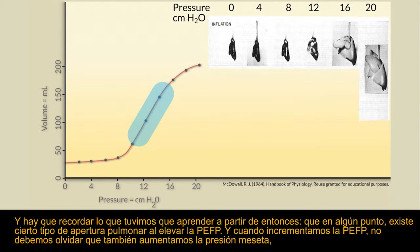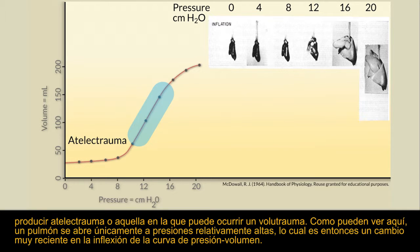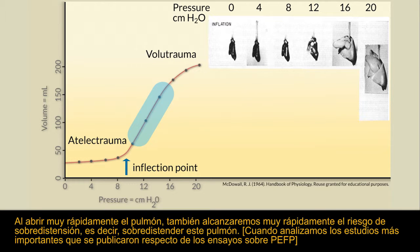What we had to learn is that somewhere there is some kind of lung opening when we turn up PEEP. By turning up PEEP, do not forget, you also turn up your plateau pressure if you're in volume control, or your peak inspiratory pressure if you're in pressure control mode. We had to learn that we have to set a tidal volume between the area where atelectotrauma or volutrauma may occur. A lung opens at relatively high pressures only, at the inflection of the pressure-volume curve, and will very quickly also reach the risk of overdistension.